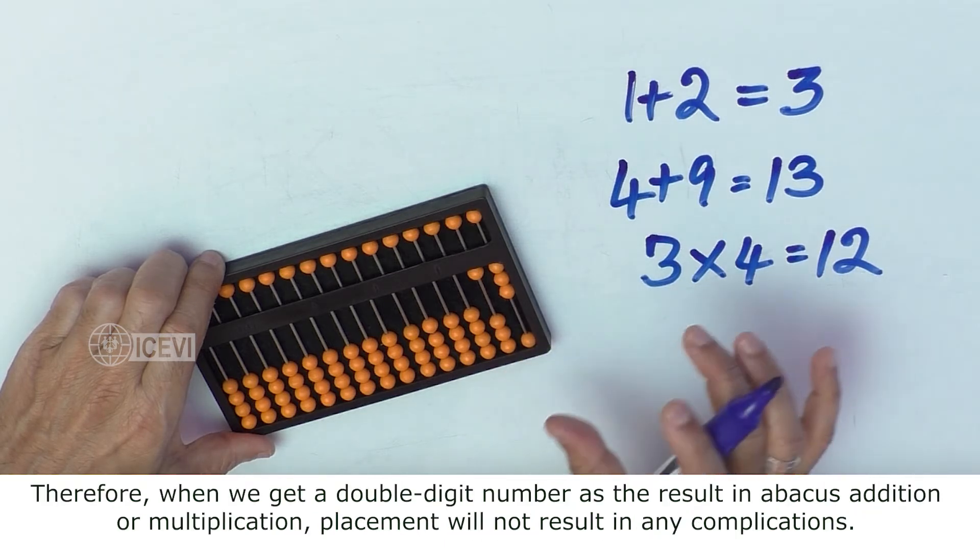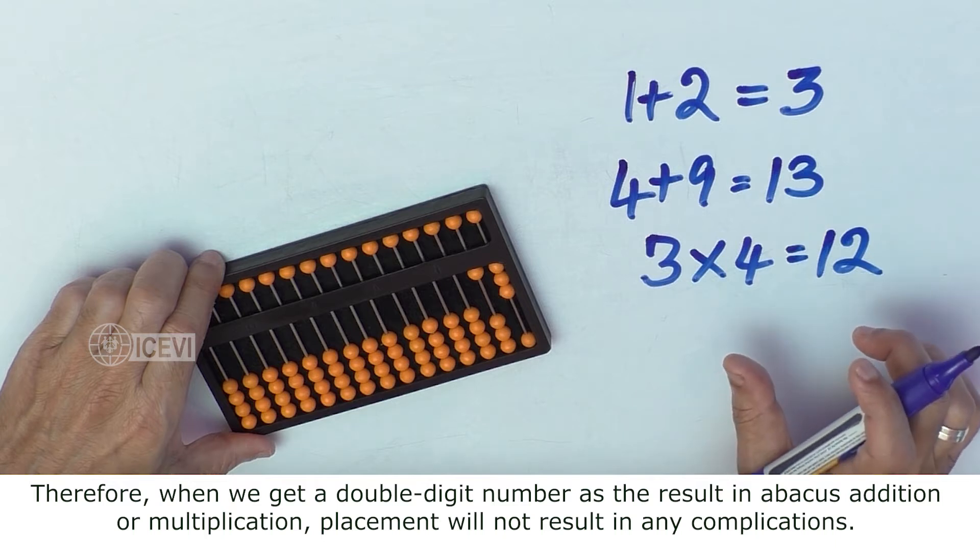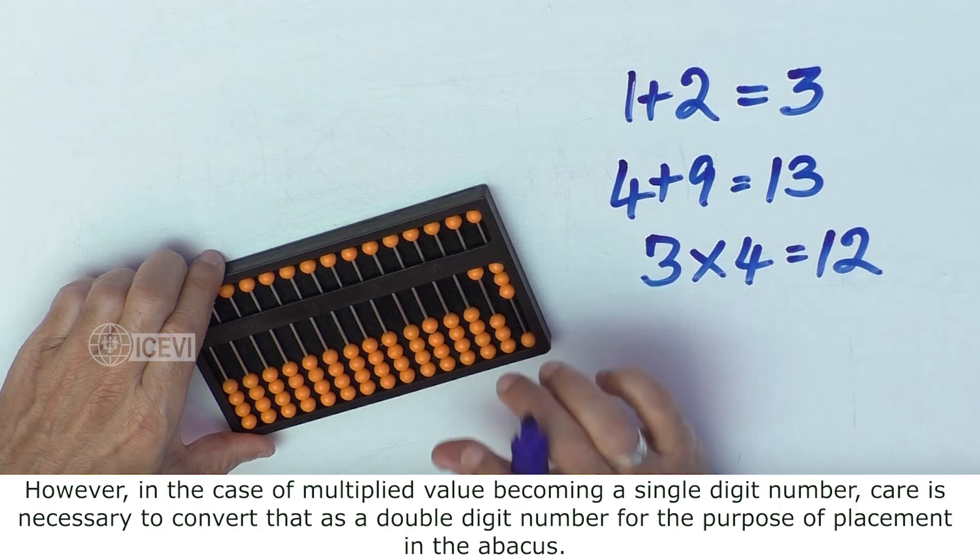Therefore, when we get a double digit number as the result in Abacus Addition or Multiplication, placement will not result in any complication. However,